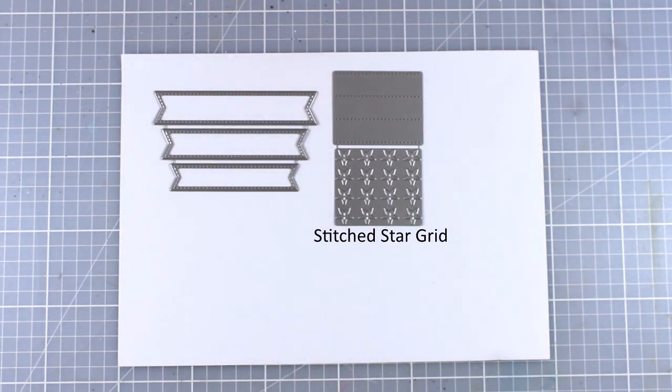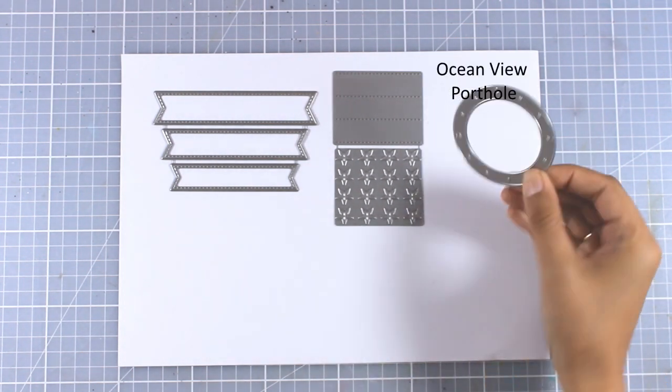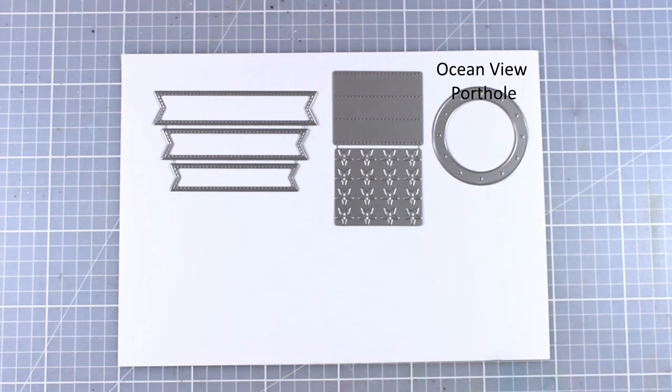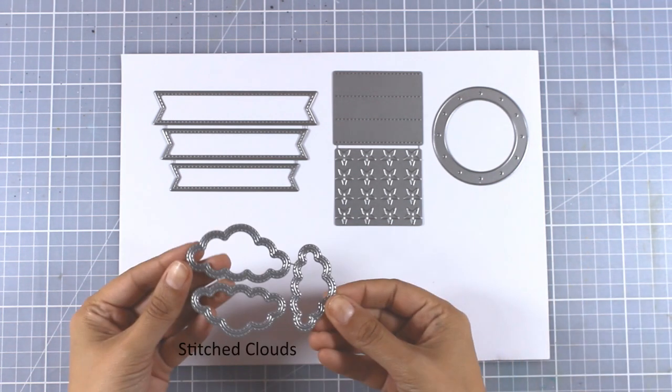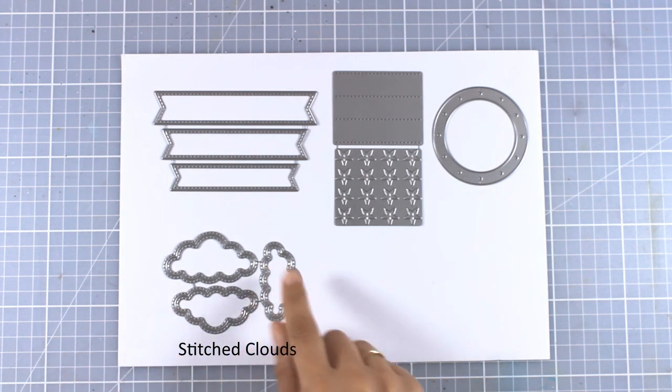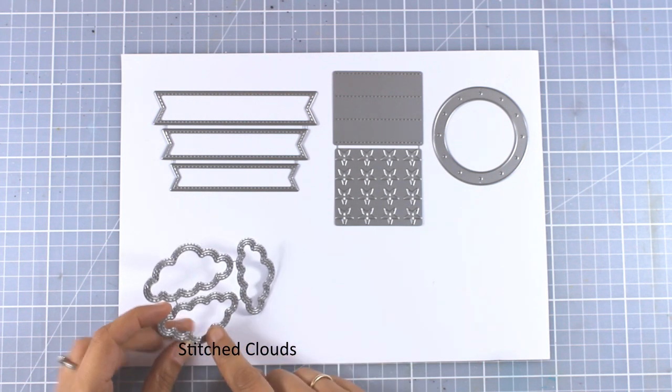Here is a die that I'm in love with, the Ocean View Portal. I really love it because I love creating shaker cards, and I think this is going to be a great way to create shaker cards that give you a view underwater. There are also clouds, and this time the clouds have stitching on the inside and outside. You know I love clouds and use them all the time for creating my little sky scenes, so I know I will be using these a lot.